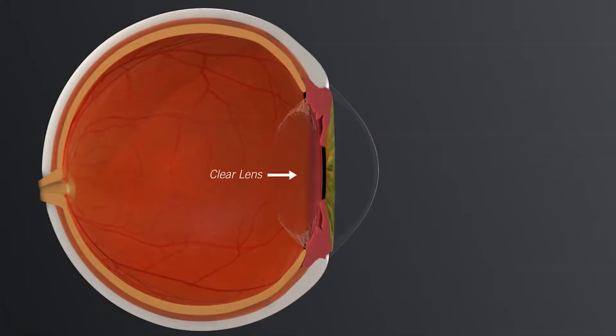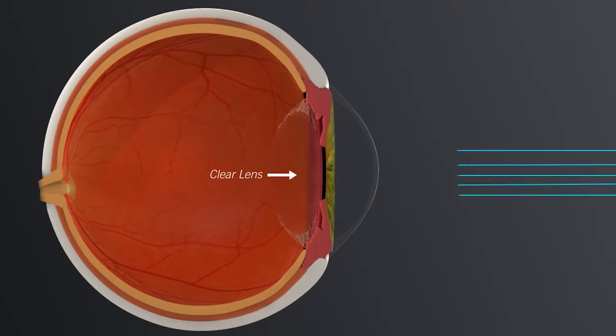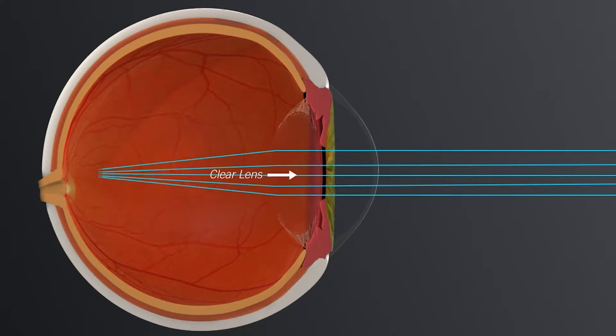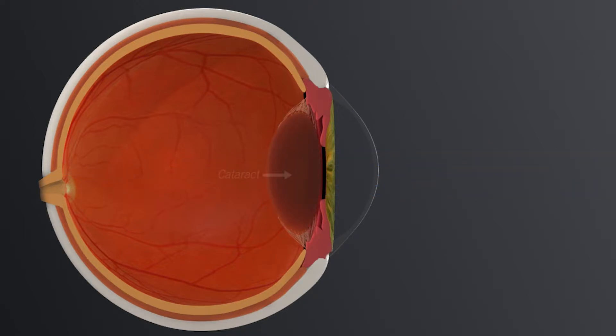People commonly ask: what is a cataract and how do I know if it's affecting me? To better understand this, we need to examine the eye itself. The lens is the part of your eye that focuses light on the retina, which is in the back of the eye. The lens is clear when you are born, but over time it becomes cloudy and yellow and starts to obscure the vision. This cloudy lens is then called a cataract.